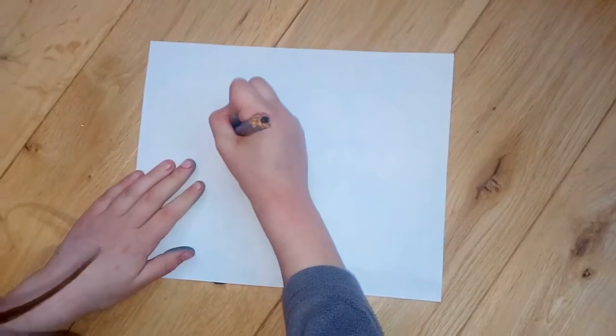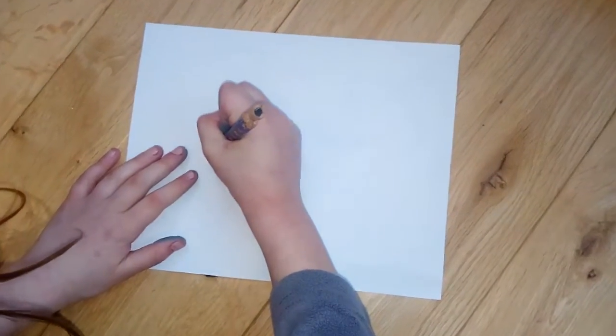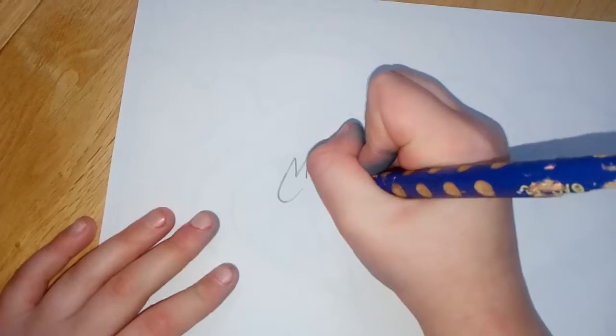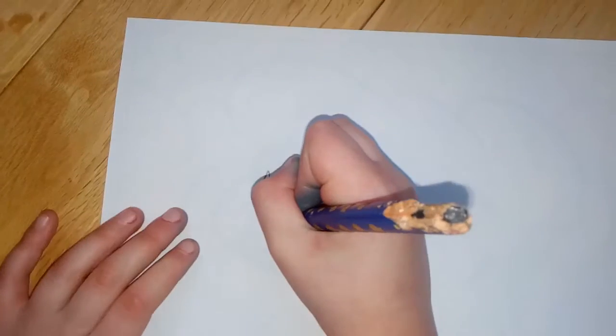The first thing you'll need to do is draw two ears and then you're going to go round like this. And then for the neck you're going to go down.